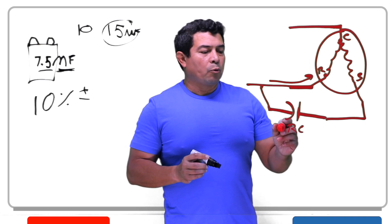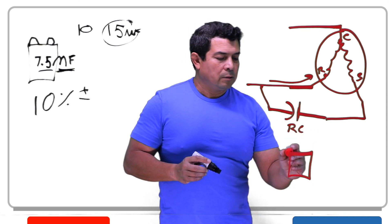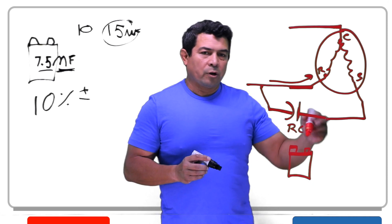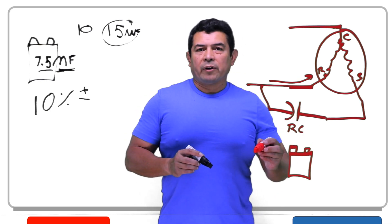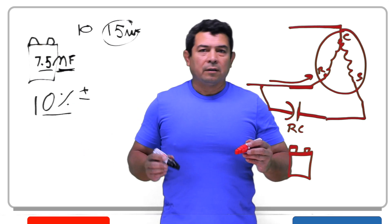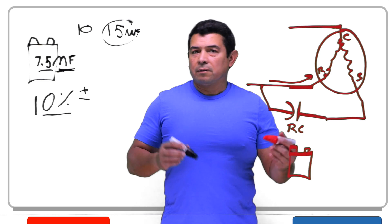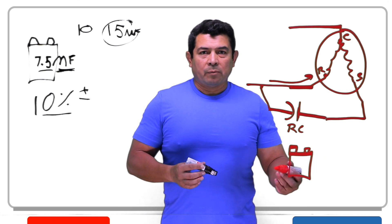So this capacitor, what we're going to do is we're going to take it off of here, and we're going to hook up the meter to it to see what the microfarads are. If they are within 10%, then we're okay. We know the capacitor is good. If they're not, then we know the capacitor is bad.